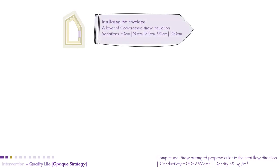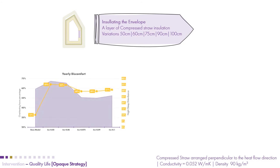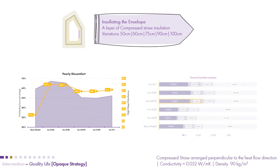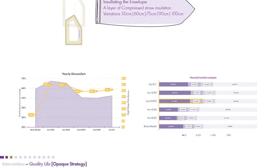Insulating the whole building gave us a number of effects. We noticed a very similar thermal comfort effect from insulation thicknesses of 0.75, 0.2, and 0.1 centimeters — all having very similar thermal properties, including effects on overheating. Based on this, we settled on 0.75 centimeter thick insulation around the building envelope.